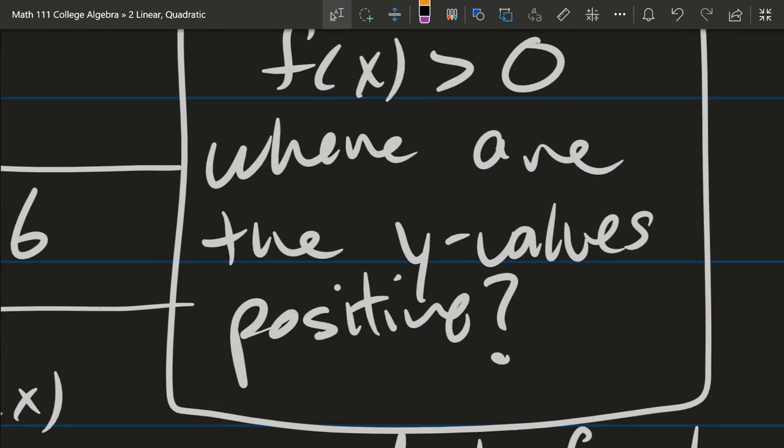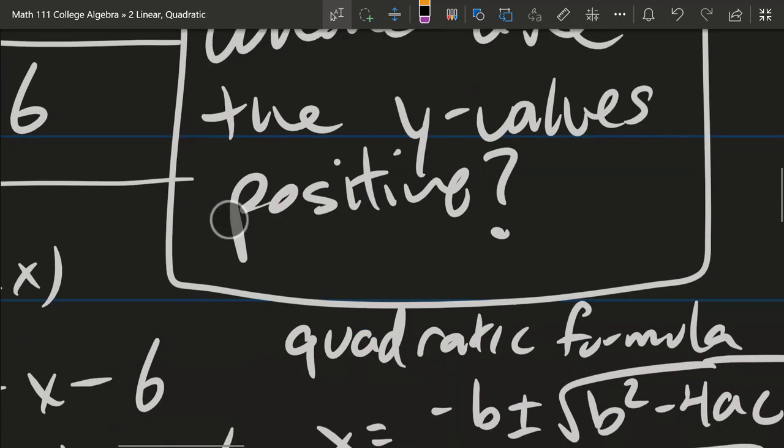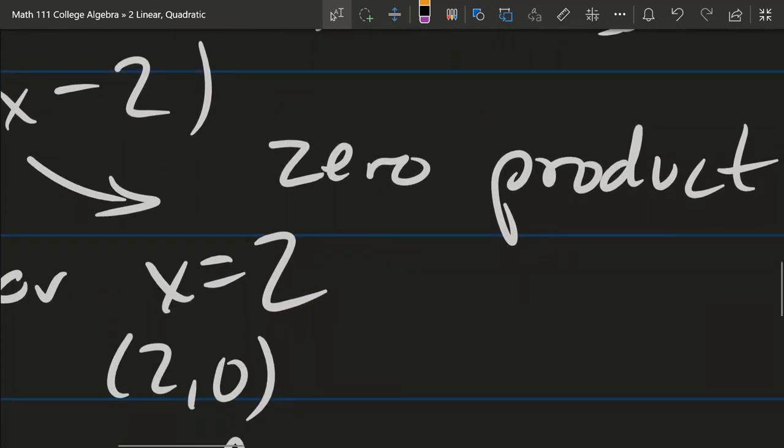And we have zero comma negative six is our y-intercept. Now one thing you'll notice, this is not to scale. That's okay, we don't need a perfectly scaled graph here.